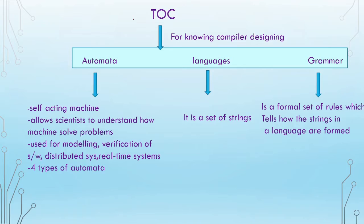This question is from Theory of Computation, also called Theory of Computer Science, Automata Theory, or Theory of Automata. It is necessary for understanding compiler design. This paper is all about automata, languages, and grammar. The word 'automata' is derived from the Greek word 'automaton,' meaning a self-acting or self-operating machine without human intervention. Scientists need to understand how a machine solves problems — that is why automata is needed. It is used for modeling, verification of software, distributed systems, and real-time systems.